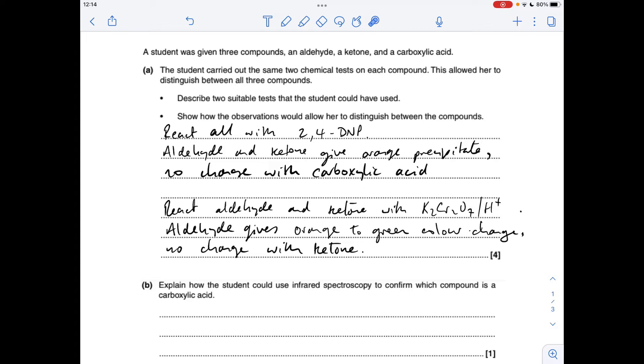You've got a couple of choices for the second test. The one I've gone for is react the aldehyde and the ketone with acidified potassium dichromate six. Only the aldehyde gives an orange to green color change. There's no change with the ketone, and that's how you would identify between those two.